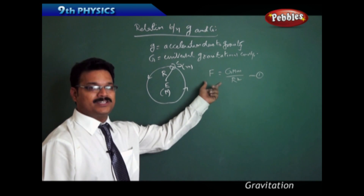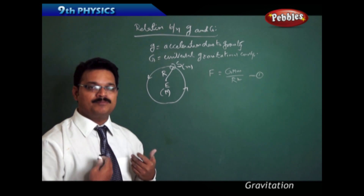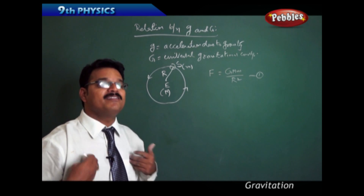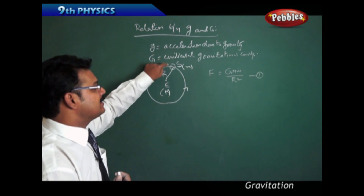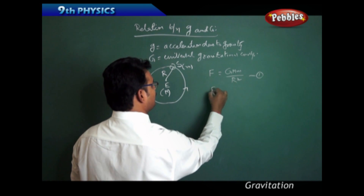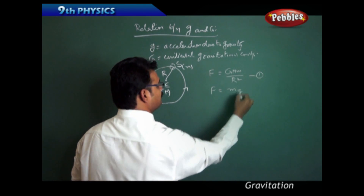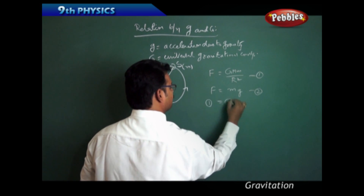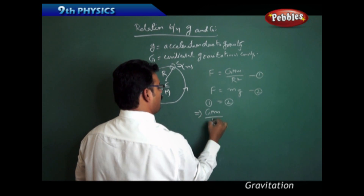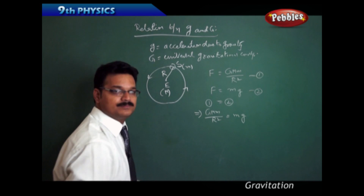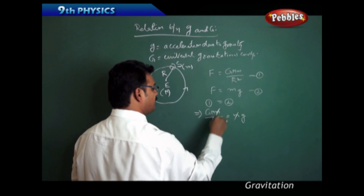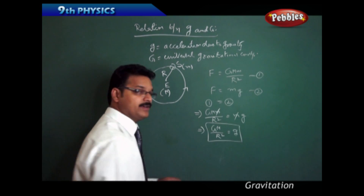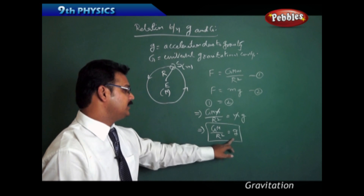The force of gravitation on a body near Earth is nothing but its weight. I experience the force of gravitation due to the Earth, and that experience is my weight. Similarly, the satellite's weight is the force of gravitation on it, so F = m·g — that's equation 2. Both expressions are equal: G·M·m / R² = m·g. Simplifying by canceling small m gives g = G·M / R².